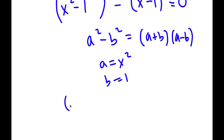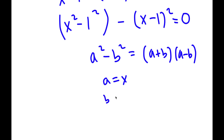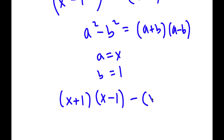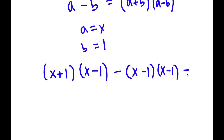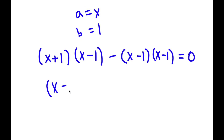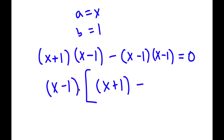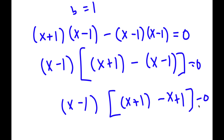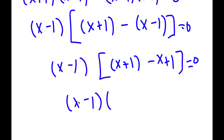So x squared minus 1 squared becomes (x plus 1)(x minus 1). Then I have minus (x minus 1)(x minus 1), since (x minus 1) squared is the same as (x minus 1)(x minus 1), all equal to 0. Factoring out (x minus 1), I get (x minus 1) times [(x plus 1) minus (x minus 1)] equals 0, which simplifies to (x minus 1) times 2 equals 0.